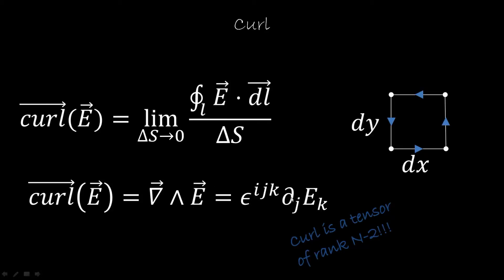We can write this in index notation using the Levi-Civita symbols. Now, when we said the curl is a vector, that's not really precise — it's a vector only if we are in three-dimensional space. In two-dimensional space, there is only one plane on which to calculate the curl, so no direction needs to be given and the curl becomes a scalar. In four-dimensional space, we need two perpendicular directions to define a plane, so the curl would be a rank-2 tensor. So really the curl is not a vector in general — it's a tensor of rank n−2, and if n is 3, then we get a vector. This is important to understand for things later.